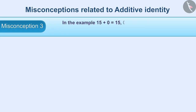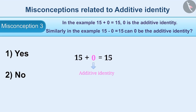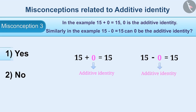Misconception 3: For example, 15 plus 0 equals 15 — 0 is the additive identity. Will 0 also be the additive identity for 15 minus 0 equals 15? By adding 0 to 15, the result is the same number, 15, so 0 is called the additive identity. Now consider 15 minus 0 equals 15 — when 0 is subtracted from 15, the result is the same number. Therefore, 0 is also considered additive identity in this case.